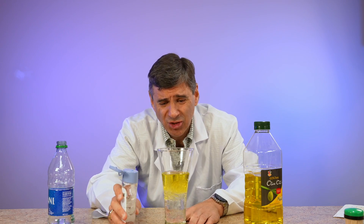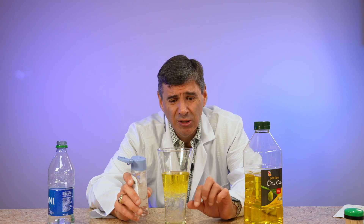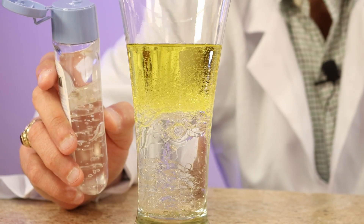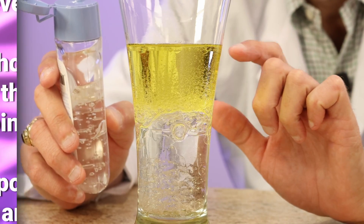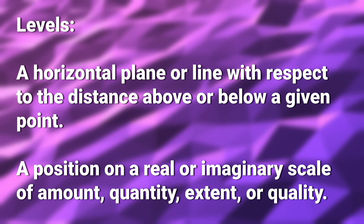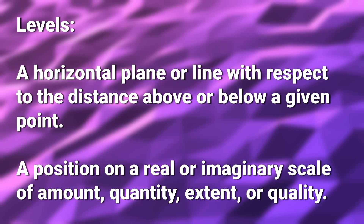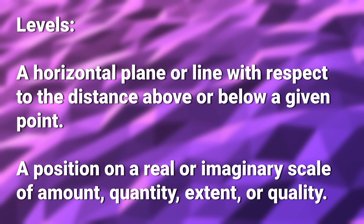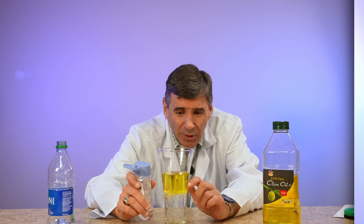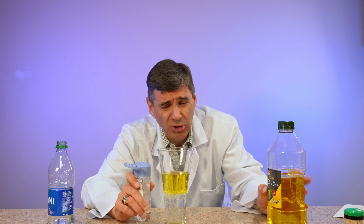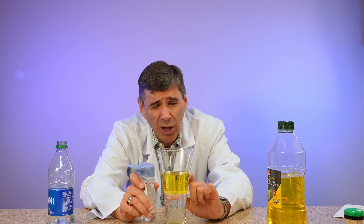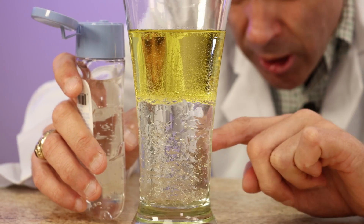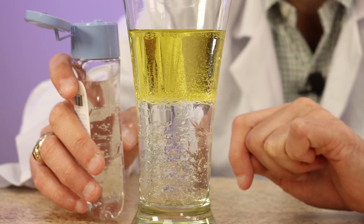So let's talk about this. This has to do with density of liquids. Levels — whether we're talking about something on the first floor, second floor, third floor — a level just indicates its position. And in the case of density of liquids, it's perfect to talk about levels. So the first thing I poured was the olive oil, and because it has the lowest density, it stayed on top. You'll then notice the baby oil is just below that, and the water is on the bottom.